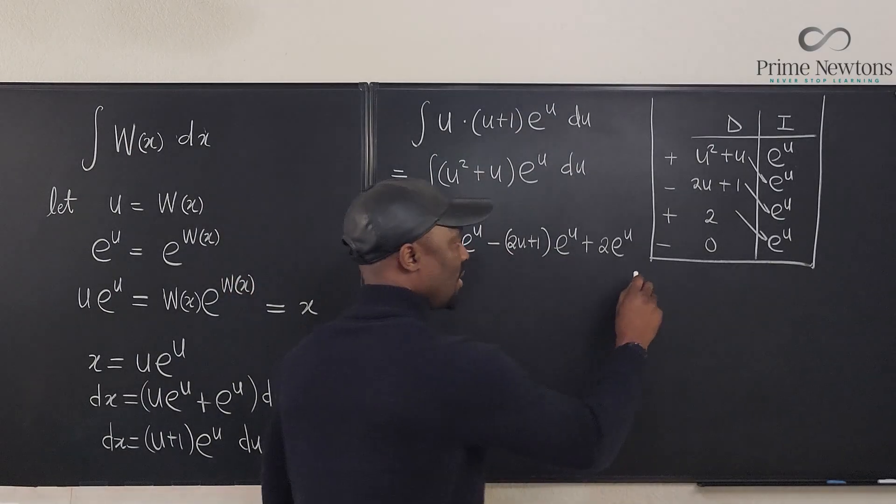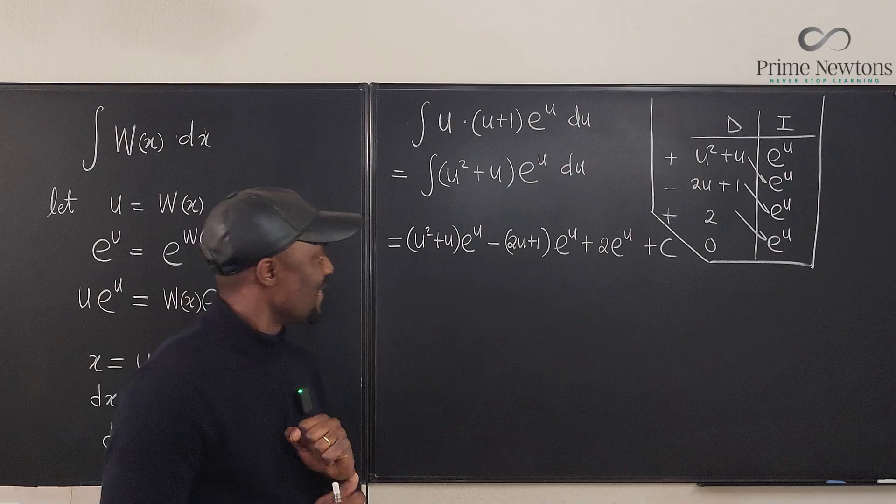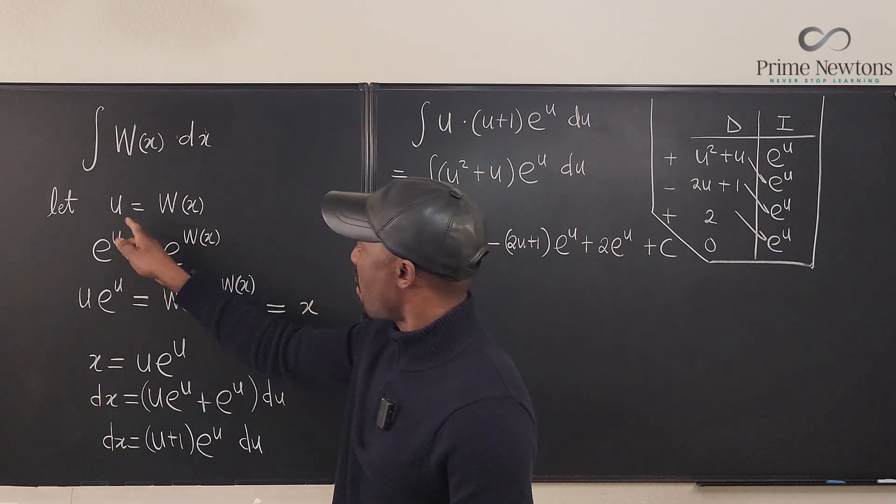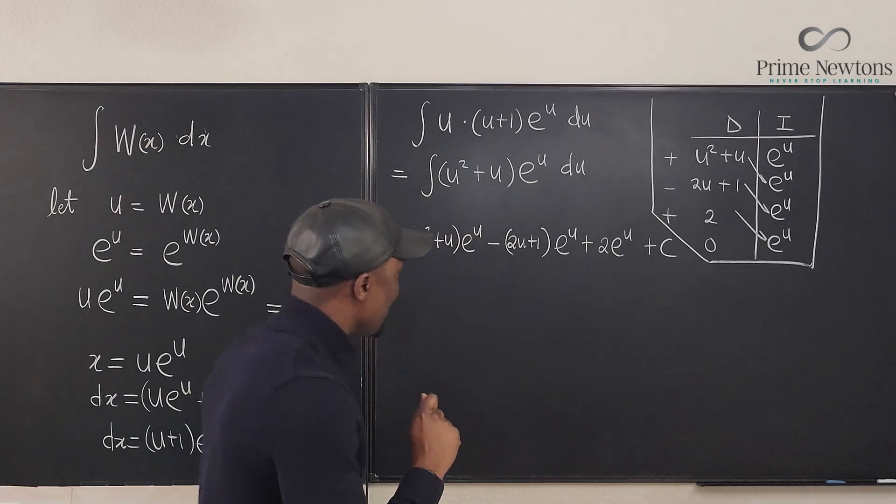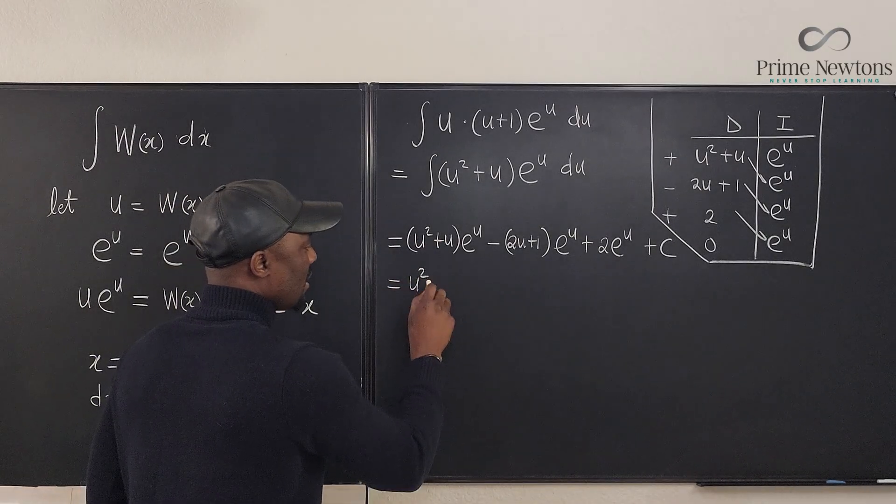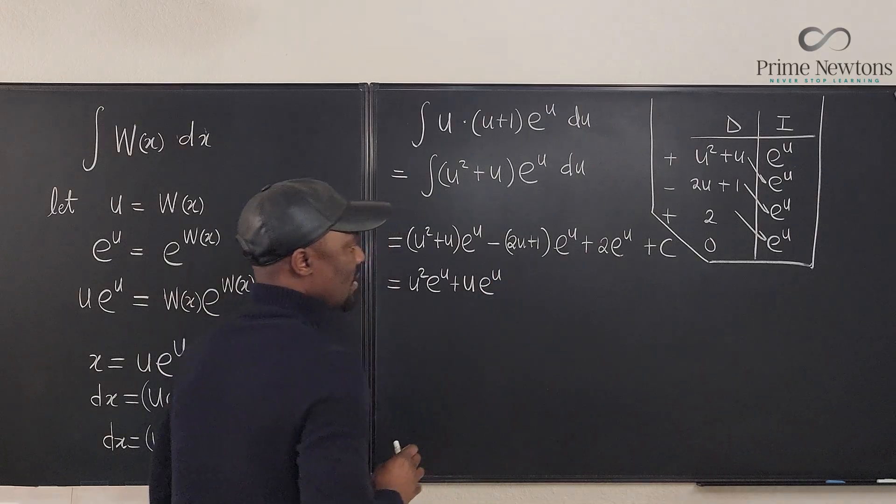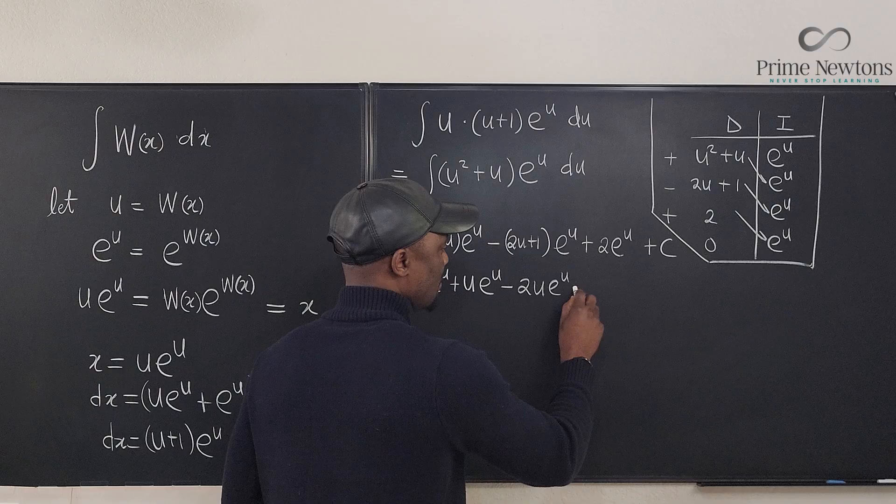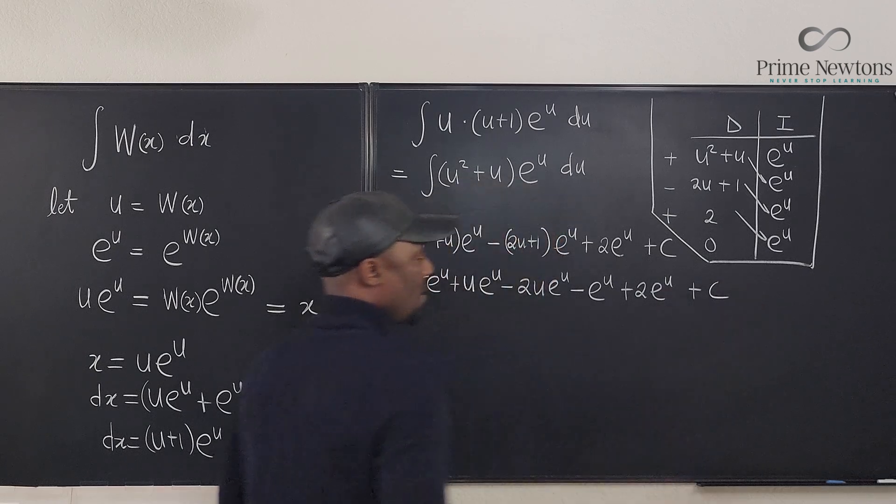This is our... plus c. Never forget plus c. Let's find a spot for plus c here. We have u squared plus u times e to the u. The next line is going to be minus 2u plus 1 minus 2u plus 1 times e to the u. And then we're going to have plus 2e to the u. And then we have our constant of integration.